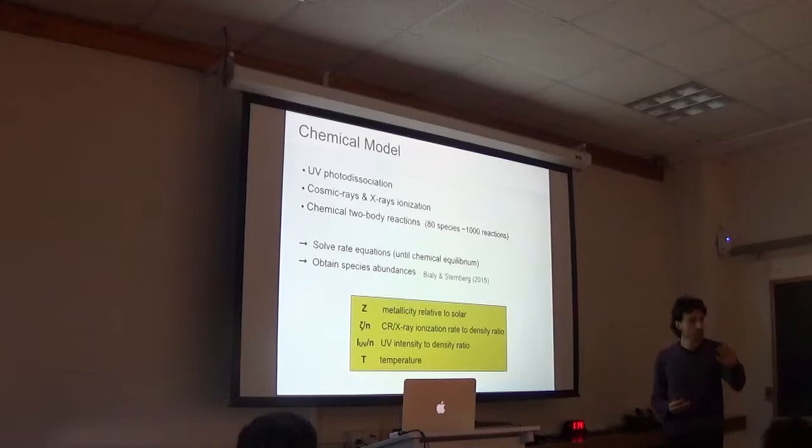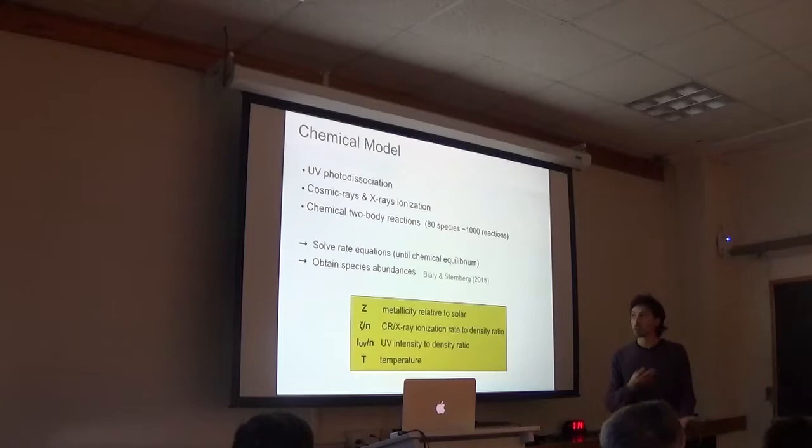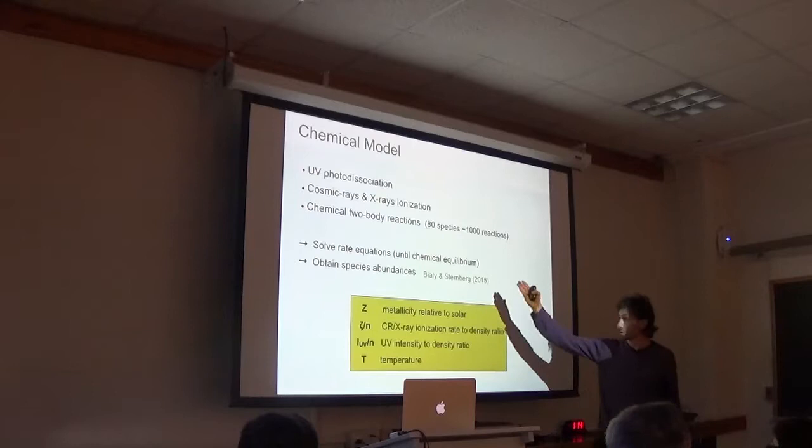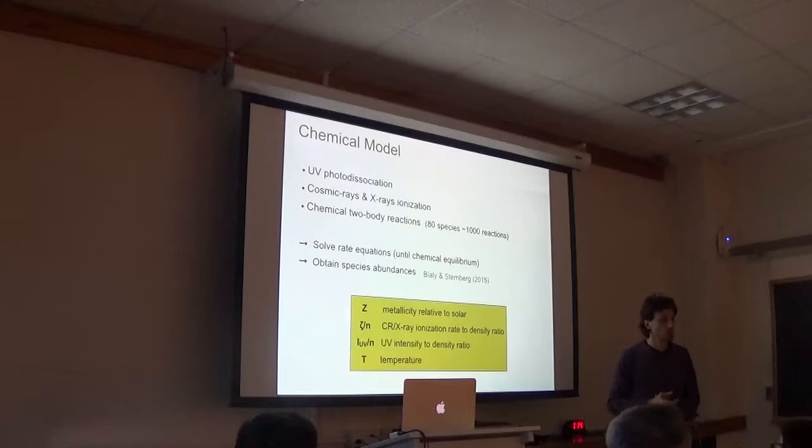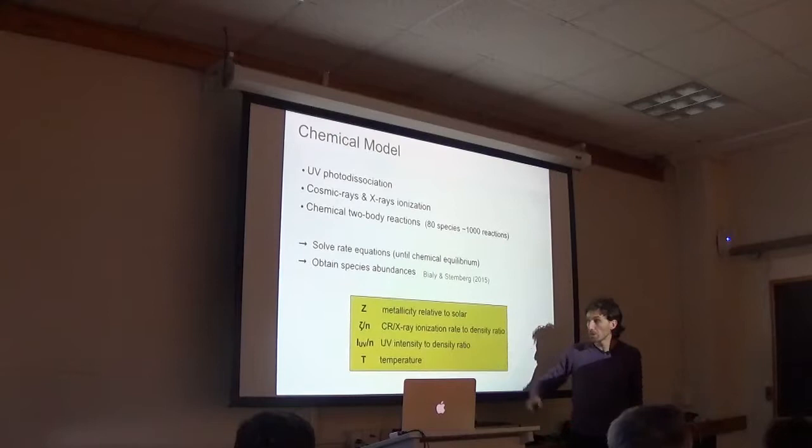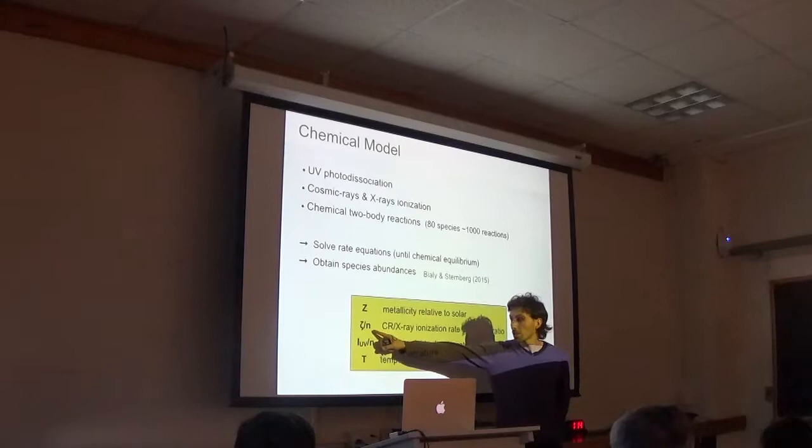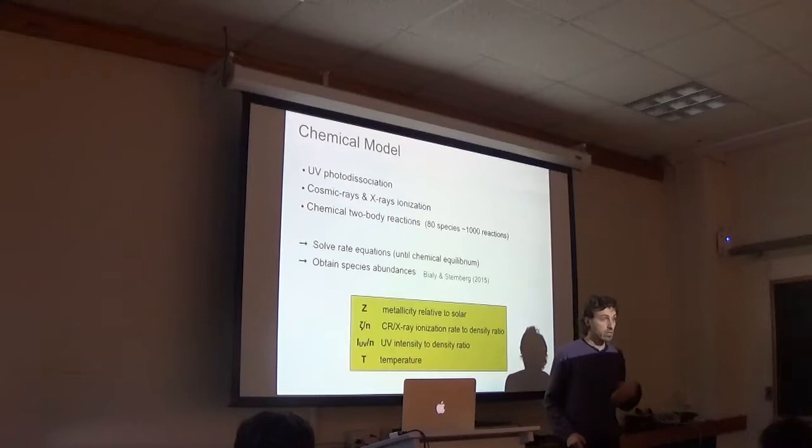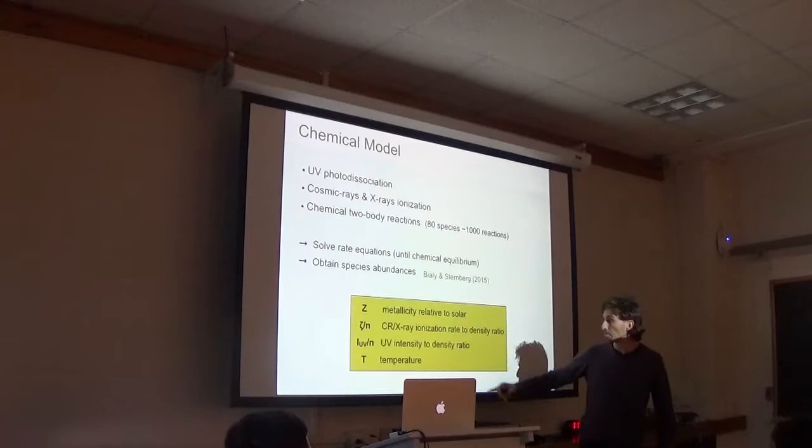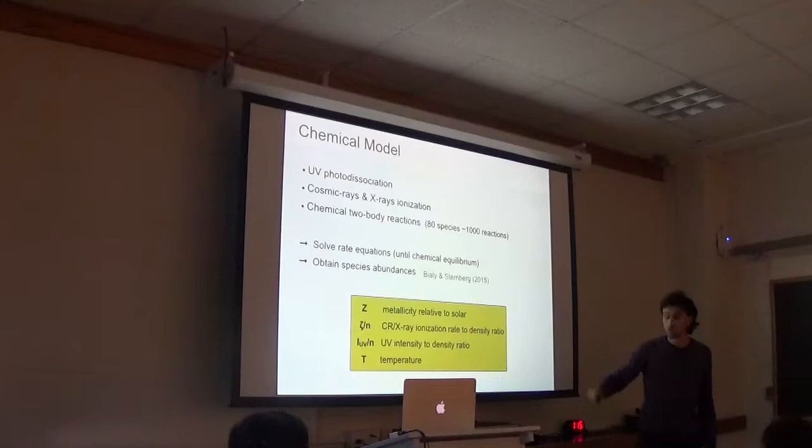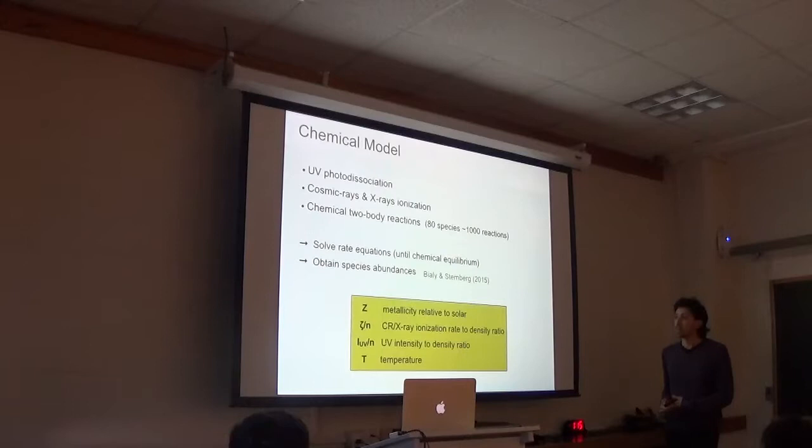So the scenario is as follows. We have a molecular cloud. It's irradiated by different kinds of radiation: cosmic rays, X-rays, UV. The UV can penetrate partly inside depending on the wavelengths and also on metallicity, because the dust absorbs the UV. And when you decrease the metallicity, you decrease the dust abundance and the absorption of the UV.